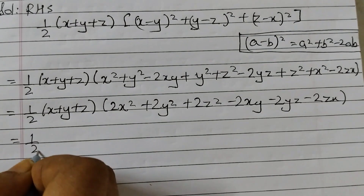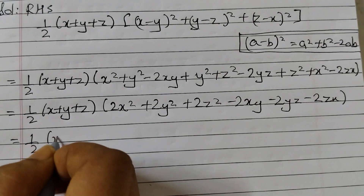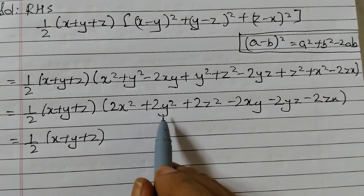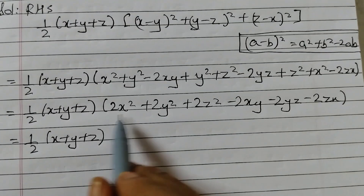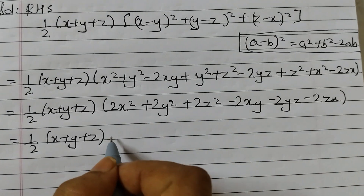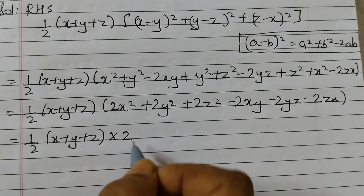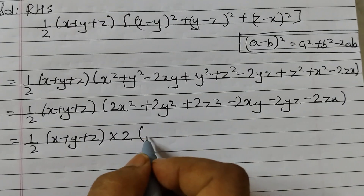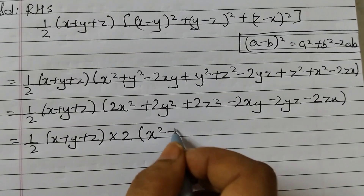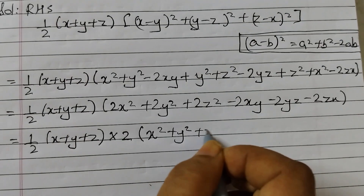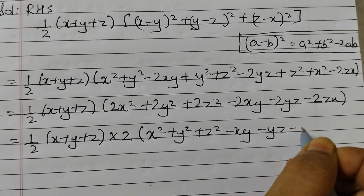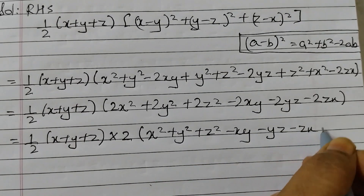Next step: 1 by 2 into x plus y plus z. Now if you see, each of these terms has a factor of 2. So we can take 2 as a common factor outside the bracket, giving us 2 into x squared plus y squared plus z squared minus xy minus yz minus zx.